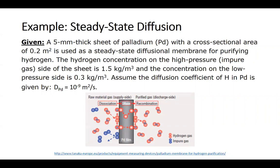For our example, we're going to take a five millimeter thick sheet of palladium with a cross-sectional area of 0.2 meters squared. It's going to be used as a steady-state diffusional membrane for purifying hydrogen.